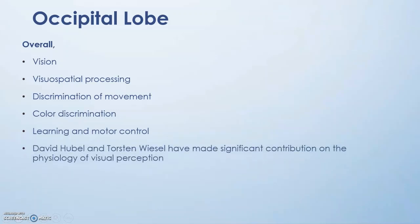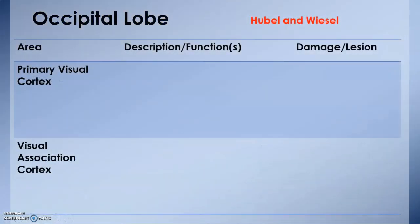When we talk about occipital lobe, David Hubel and Torsten Wiesel have made significant contributions to our understanding of the physiology of visual perception. Two names to be associated with occipital lobe are David Hubel and Torsten Wiesel. Moving forward, there are two important areas of occipital lobe that we need to know about.